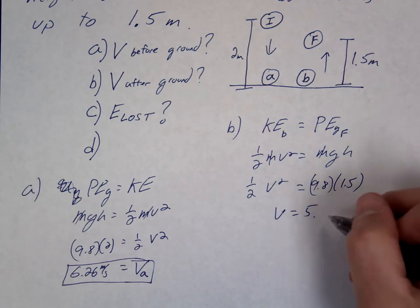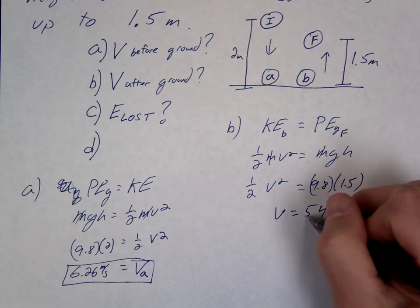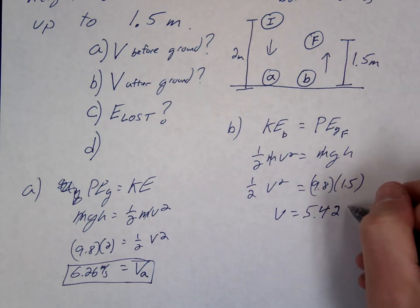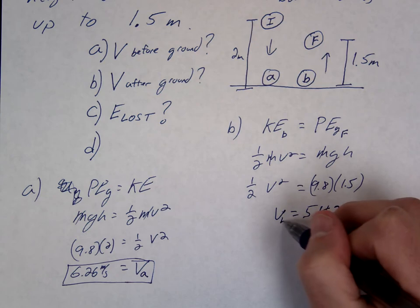5 point something. 4, 3, 2. So we'll call that VB.